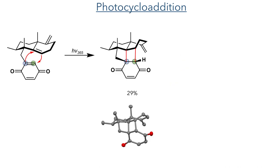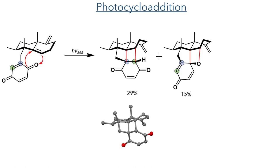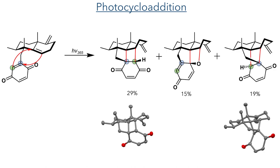With this quinone complete, they could then perform the critical photocycloaddition reaction. The compound was irradiated with light at 365 nm and three different products were formed. The first arose from a [2+2] cycloaddition of the two alkenes present in the quinone and steroid frameworks, formed in a 29% yield with the structure proven using X-ray crystallography. The next product was formed from a [2+2] cycloaddition between the alkene and the carbonyl, commonly known as a Paternò-Büchi reaction, formed in 15% yield. Also formed was a cyclobutane product from a crossed alkene [2+2] cycloaddition, occurring in a similar reacting conformation to the Paternò-Büchi reaction but between the two alkene groups, also confirmed by X-ray crystallography.